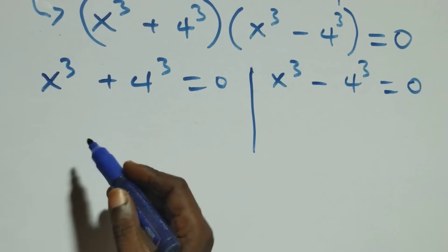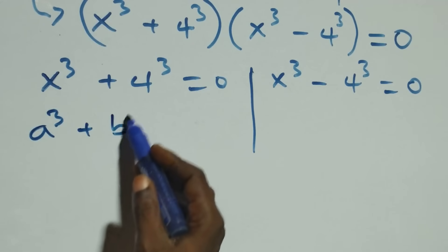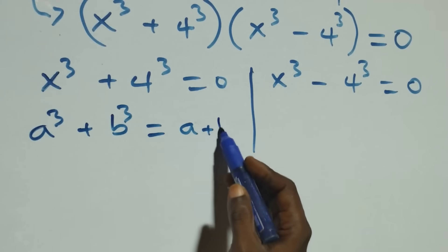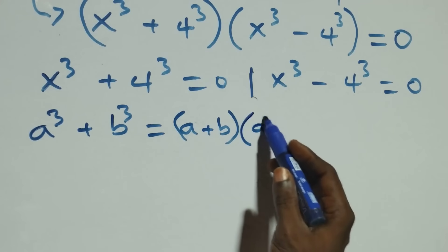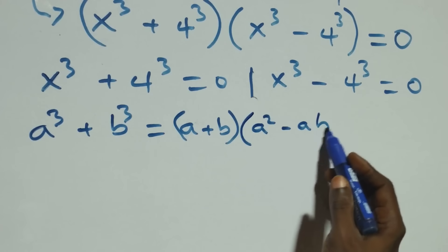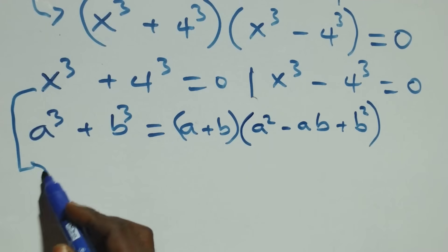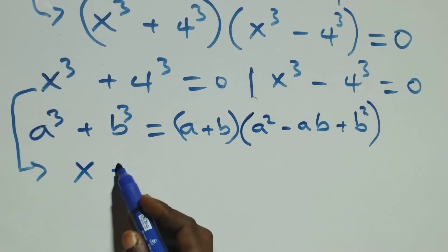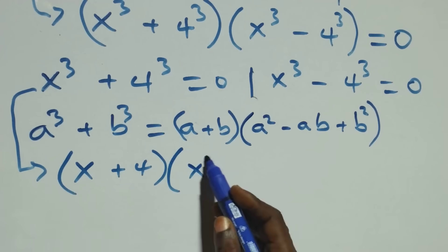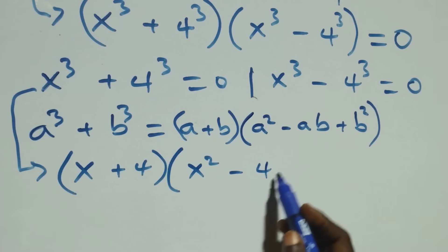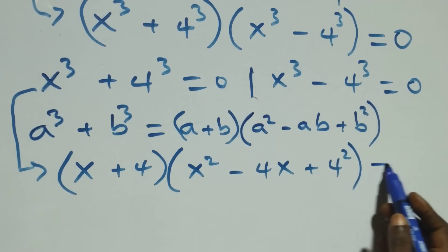Solving from the first case, this follows the sum of cubes identity: a cubed plus b cubed equals (a + b)(a squared minus ab plus b squared). So this becomes (x + 4)(x squared minus 4x plus 4 squared) equals zero, that is (x + 4)(x squared minus 4x + 16) equals zero.